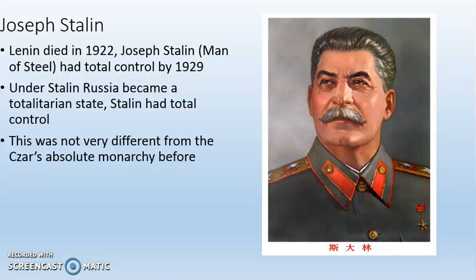Russia was renamed the Soviet Union, or USSR. I use those two names pretty much interchangeably, but they are not exactly the same. Under Joseph Stalin, the USSR became a totalitarian state, or authoritarian state — these words basically mean the same thing. Stalin had total control. This was not all that different from the czar's absolute monarchy before, and the people were comfortable with this arrangement.